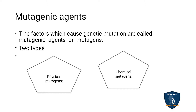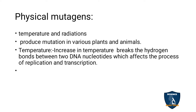There are two types of mutagenic agents: physical mutagenic agents and chemical mutagenic agents. Physical mutagenic agents cause mutation physically in an organism due to temperature and radiation. These two are the physical mutagenic agents which produce mutation in plants and animals.